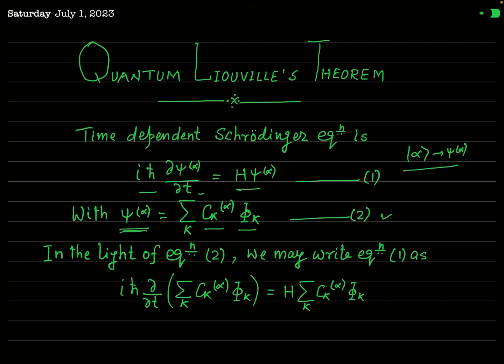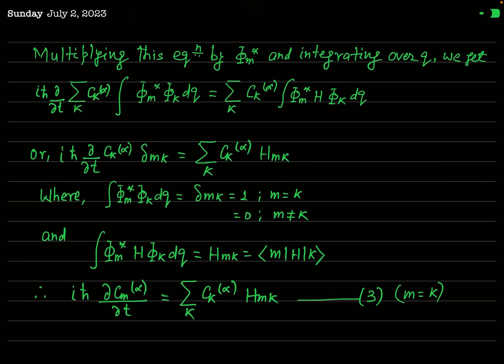Now when we substitute equation 2 — which defines ψ_α — into equation 1, equation 1 becomes: iħ ∂/∂t (Σ_k c_k^α φ_k) = H (Σ_k c_k^α φ_k). This is Schrödinger's time-dependent equation after substitution.